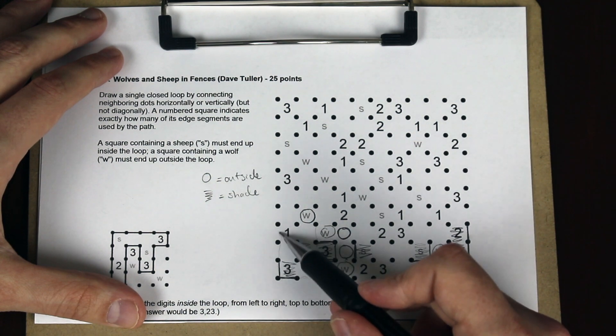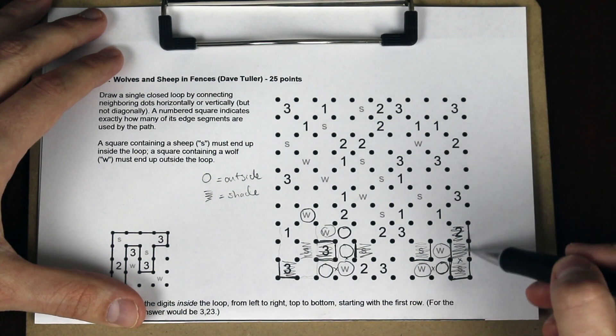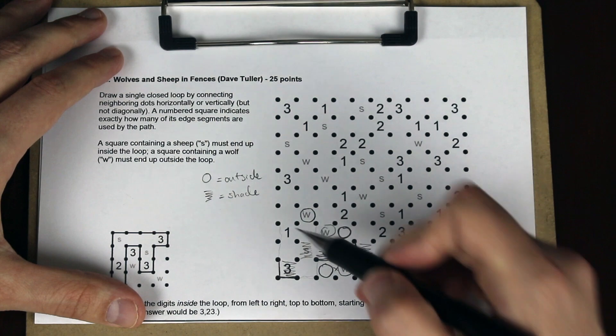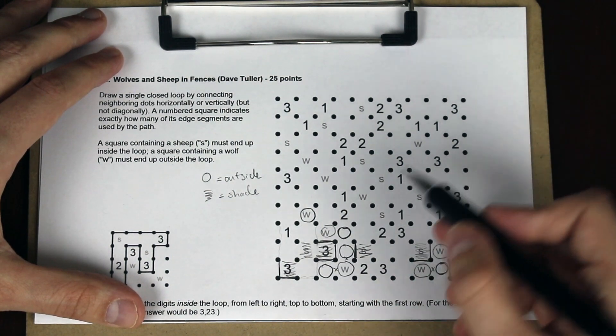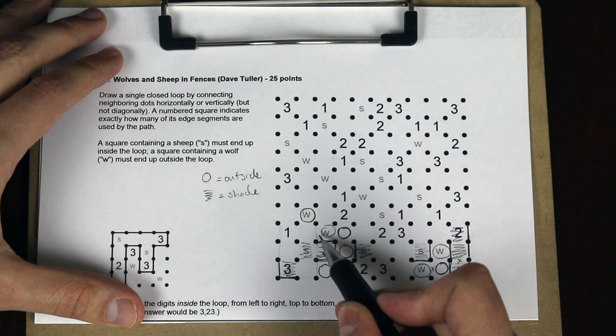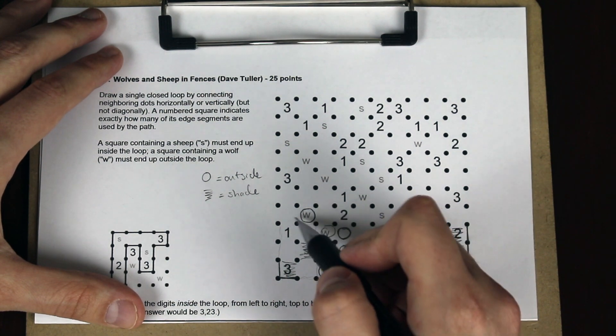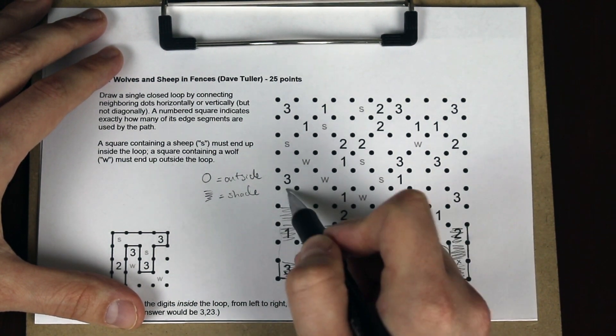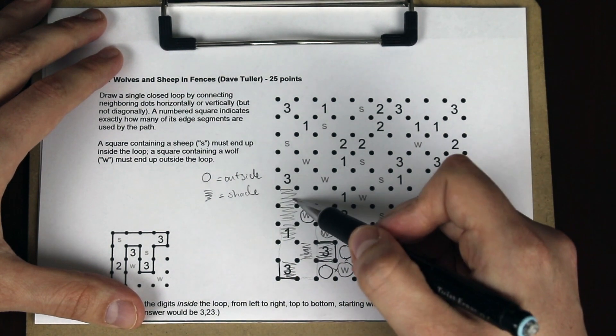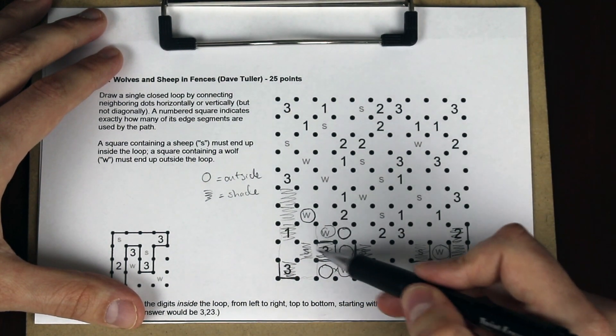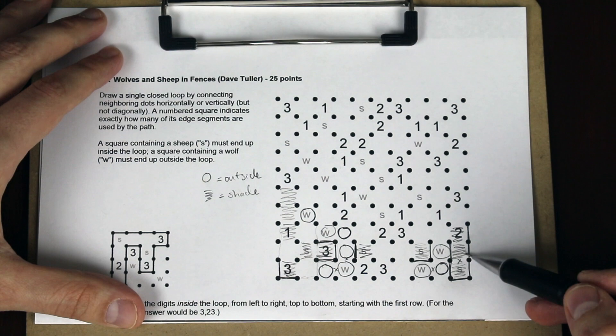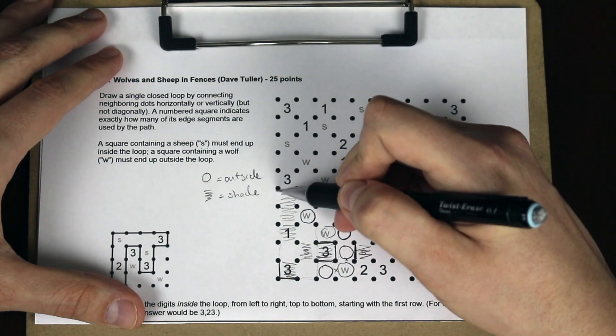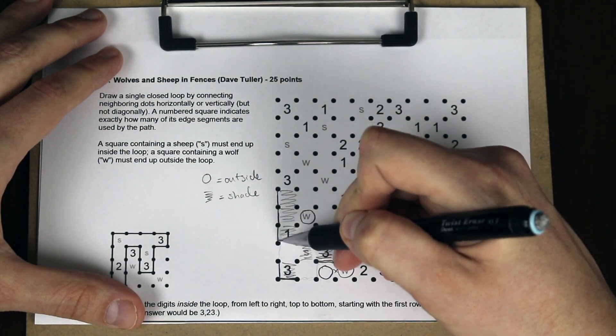This region here is inside the loop currently. It needs to connect to other regions elsewhere in the puzzle, so it has to be able to reach it somehow. It can't go this way. It can't go through those two walls, so it must come out through here. That means that we can actually shade these squares here. We know these have to be inside the loop, so that the inner part can reach the other part of the puzzle.